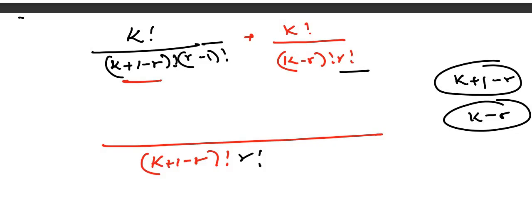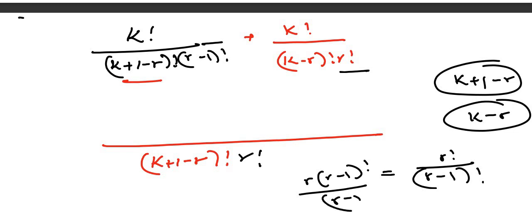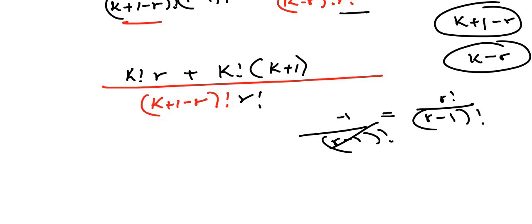So (k plus 1 minus r) is the bigger denominator and r factorial is the bigger one. We do what we always do — this into that. r minus one factorial goes into r factorial, and since r factorial equals r times (r minus 1) factorial, the factor r remains. So multiplying k factorial by r is the result for the first term. For the second term, r factorial cancels with r factorial.